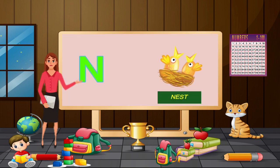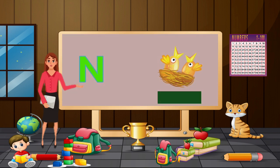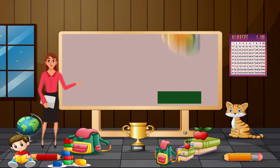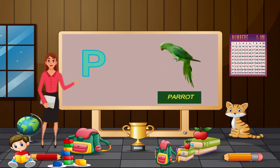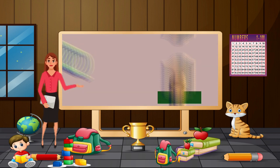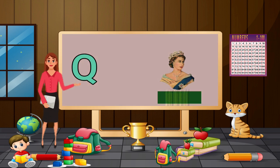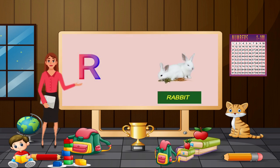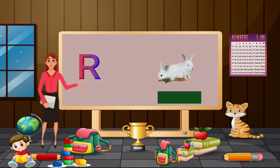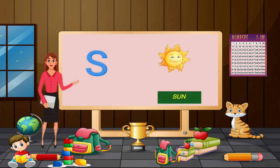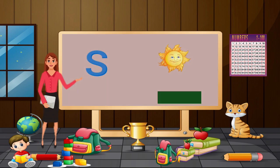M for mango, N for nest, O for orange, P for parrot, Q for queen, R for rabbit.